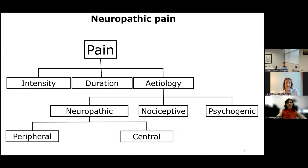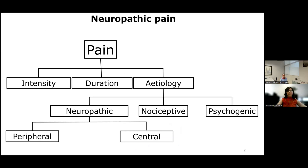Pain is defined as an unpleasant sensory and emotional experience associated with or resembling that associated with damage or potential damage. It is a complex symptomatology that can be classified in terms of intensity, duration, or etiology. It can be produced by damage in the central or in the peripheral nervous system, in the structures that transmit or process painful signals. This is what is called neuropathic pain.